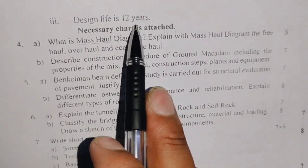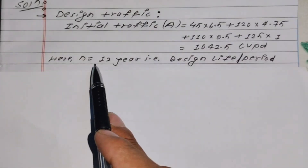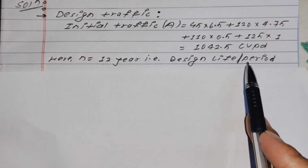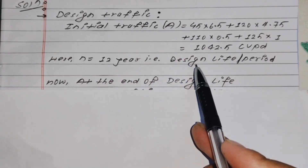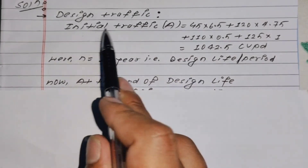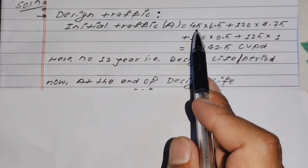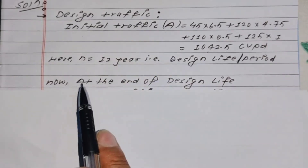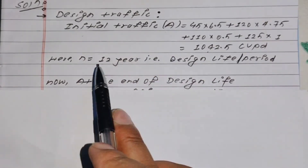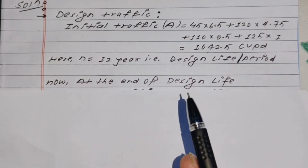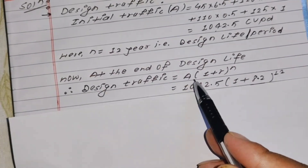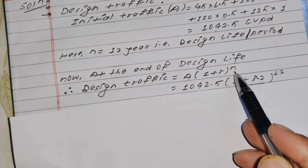The design life N equals 22 years. That is the design life or design period. At the end of the design life of 22 years, we need the traffic at the end of the design period. The design traffic formula is: A into (1 + r) to the power N.